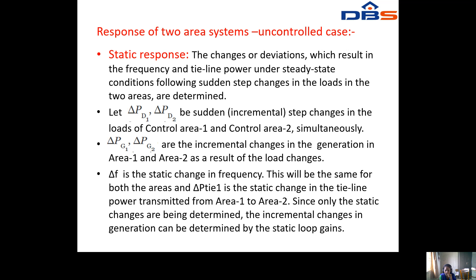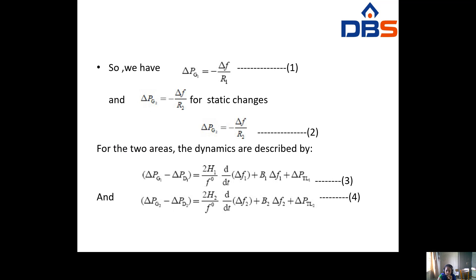Delta PG1 is the static change in frequency, which is the same for both areas. Delta PT1 is the static change in the tie-line power transmitted from area one to area two. Since only static changes are being determined, the incremental change in generation can be determined by static loop gains. So we have delta PG1 equal to minus delta F by R1 (equation 1) and delta PG2 equal to minus delta F by R2 (equation 2).